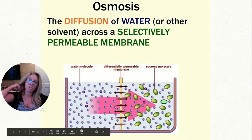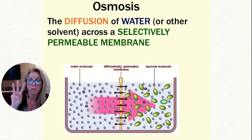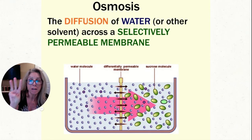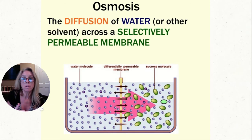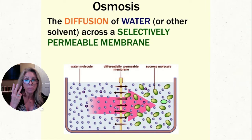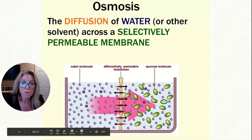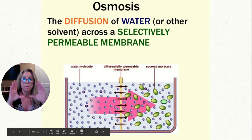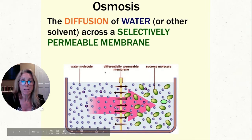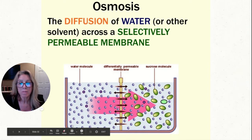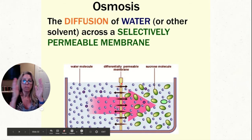Osmosis has three parts to it: the diffusion of water across a semi-permeable or selectively permeable membrane. Looking at this diagram — imagine a beaker where the two halves are separated by a membrane. The left side has pure water, and the right side has a mixture of water and sugar. So which side has a greater concentration of water? The left side — because the right side has more dissolved substances.